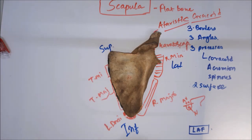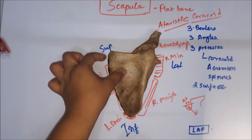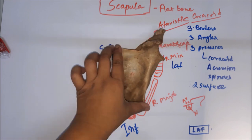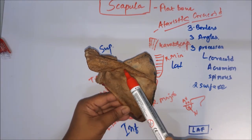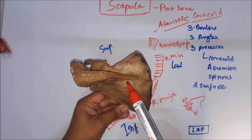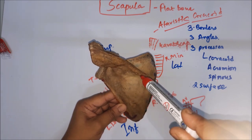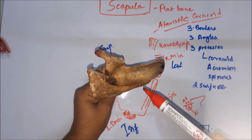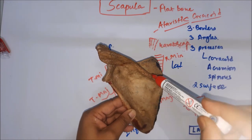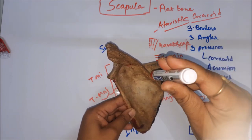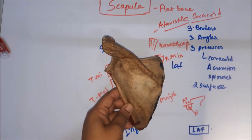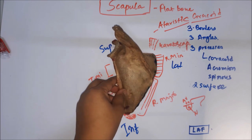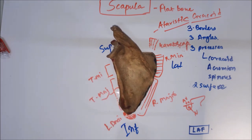In a viva, they may also ask about the movements of the scapula — protraction and retraction movements — and the axis of the scapula. The axis passes from anterior to posterior through the deltoid tubercle of the scapula, and the scapula rotates around this axis. This is more of a postgraduate question and may not be asked at the MBBS level. That is all about the scapula — please subscribe and hit the like button. Thank you.